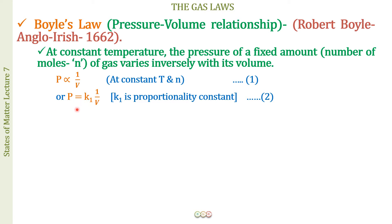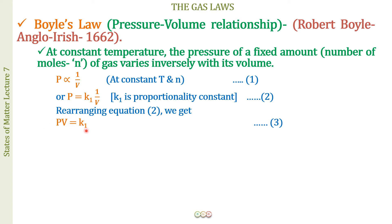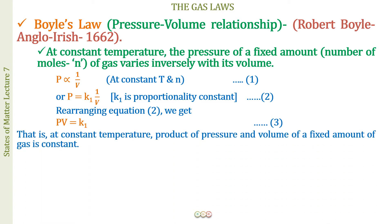Rearranging, we get PV = K₁, or PV = K. This means the product of pressure and volume will always remain constant. For example, if pressure is 4 and volume is 2, then PV = 8. If pressure changes to 2, volume becomes 4 to keep the product at 8. PV remains constant as long as temperature is constant and number of moles are fixed.